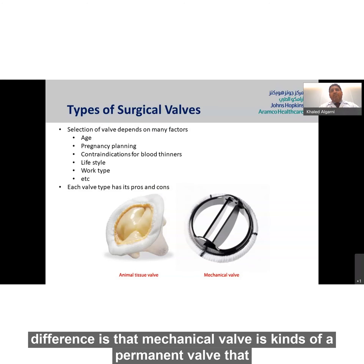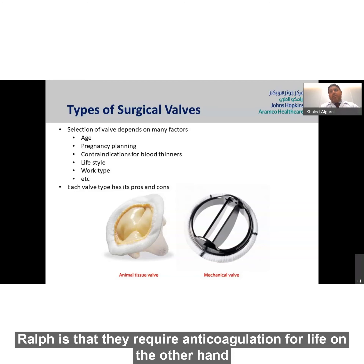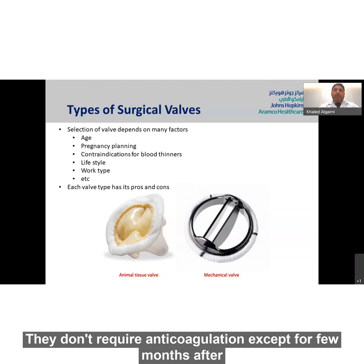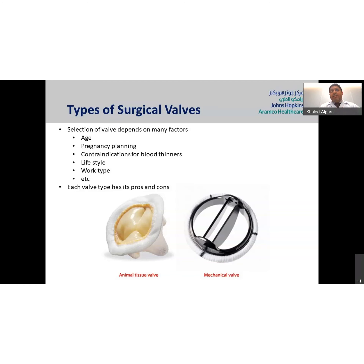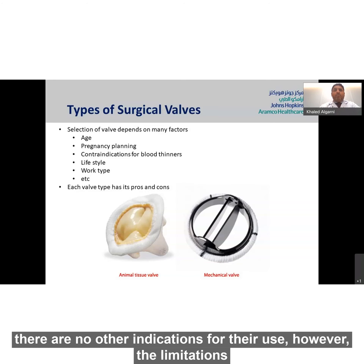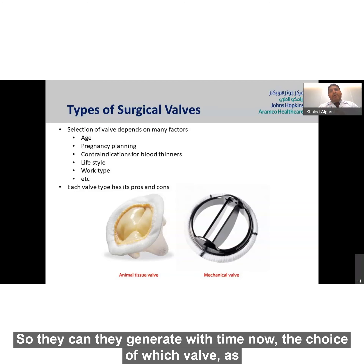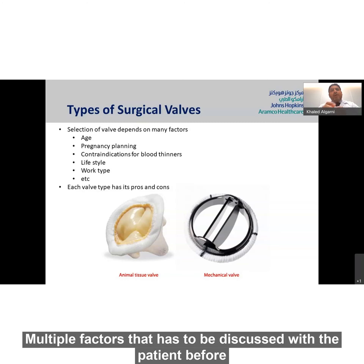Simply put, a mechanical valve is a permanent valve that doesn't degenerate with time, but requires anticoagulation for life. On the other hand, tissue valves don't require anticoagulation except for a few months after surgery, after which it can usually be stopped if there are no other indications. However, the limitation of the tissue valve is that it has wear and tear with time and can degenerate. The choice of which valve depends on multiple factors that must be discussed with the patient before surgery.